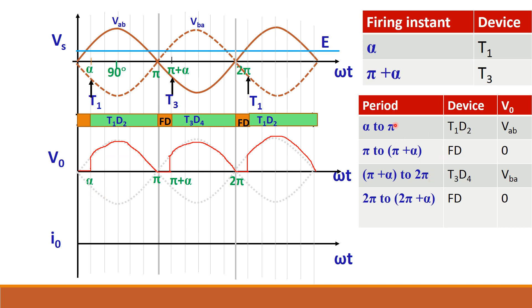So this is the table which shows the period and the output waveform and the period of conduction of the freewheeling diode. So we have assumed continuous load current. So current is continuous.